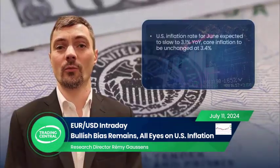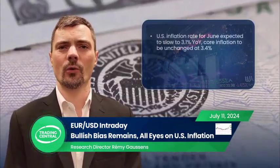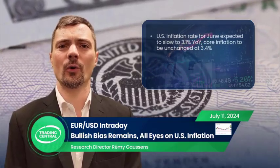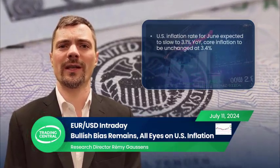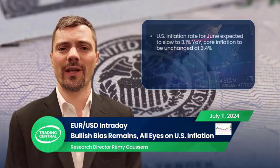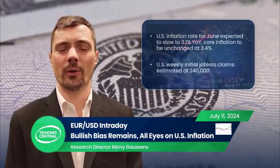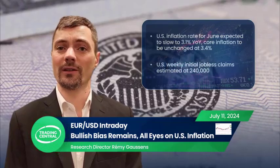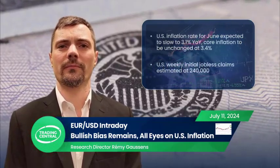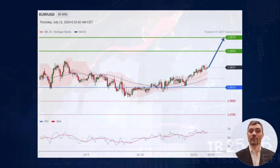The U.S. inflation rate for June is expected to slow to 3.1% year-on-year, while core inflation is anticipated to be unchanged at 3.4%. Meanwhile, weekly initial jobless claims are estimated at 240,000.